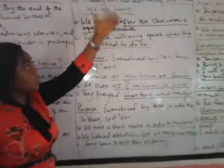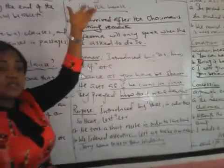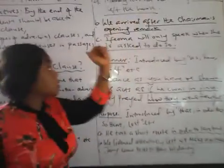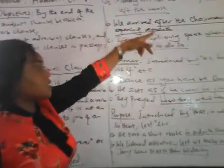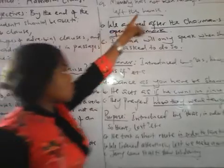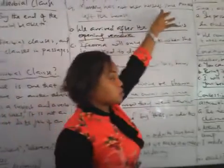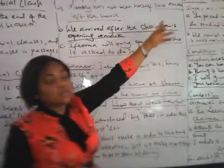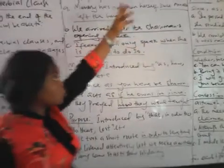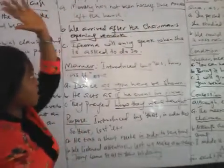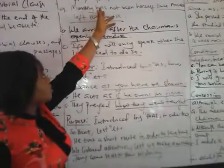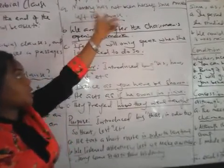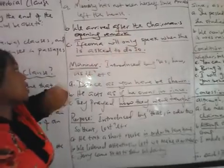We are looking at time. Introduced by 'when,' 'whenever,' 'while,' 'after,' 'before,' and so on. An example: 'Mommy has not been herself since Amaka left the house.' 'Since Amaka left the house' — this part of the sentence is the adverbial clause, introduced by 'since,' modifying the verb 'has not been herself.'